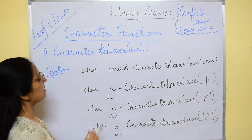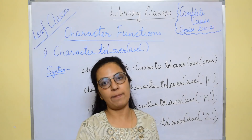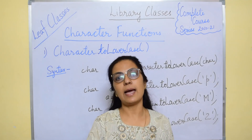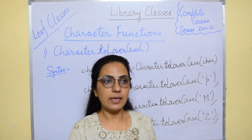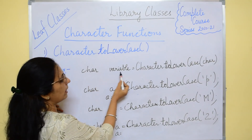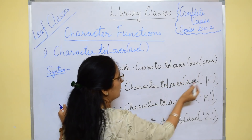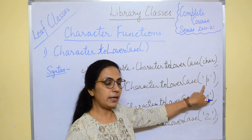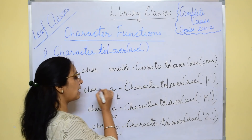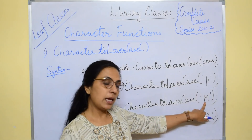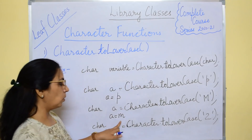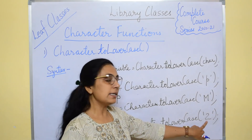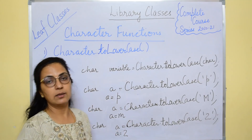The next function is Character.toLowerCase(), which is the reverse of toUpperCase(). If the given character is in uppercase, it will be converted to lowercase; otherwise the same character is returned. The syntax is: char variable = Character.toLowerCase(character). For example, Character.toLowerCase('p') — p is already in lowercase — so it returns 'p' unchanged. Character.toLowerCase('M') — M is capital — so it is converted to lowercase and the answer is 'm'. Character.toLowerCase('2') — 2 is a digit, not a letter — so the same value 2 is returned.